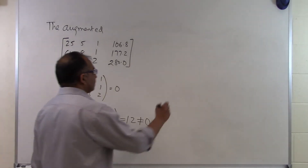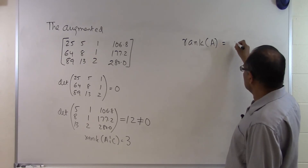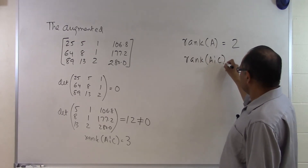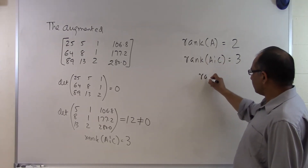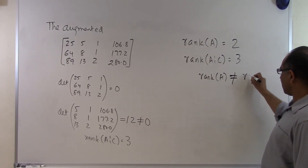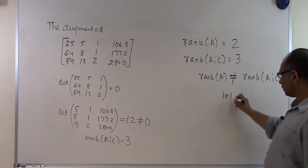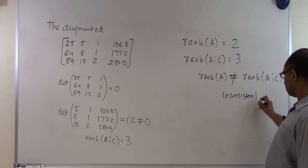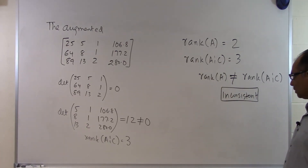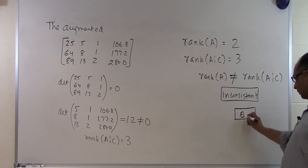The rank of the coefficient matrix A came out to be 2, and the rank of the augmented matrix came out to be 3. Since the rank of the coefficient matrix is not the same as the rank of the augmented matrix, this system of equations is inconsistent — meaning no solution exists. And that is the end of this segment.